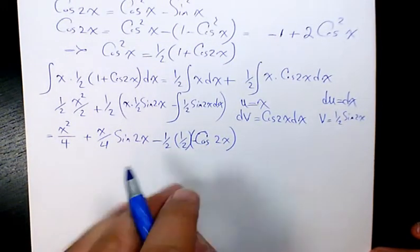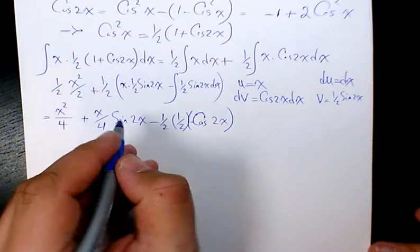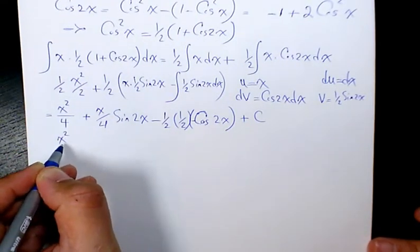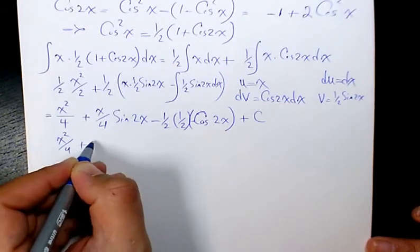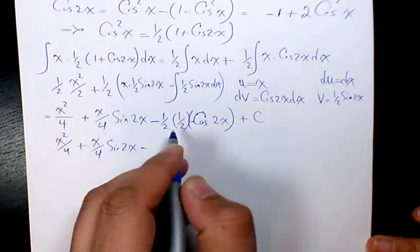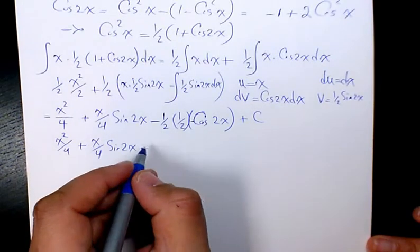Now it's correct, then plus C. So here we simplify: it's going to be x squared divided by 4 plus x divided by 4 sine 2x, and minus times minus is going to be plus...